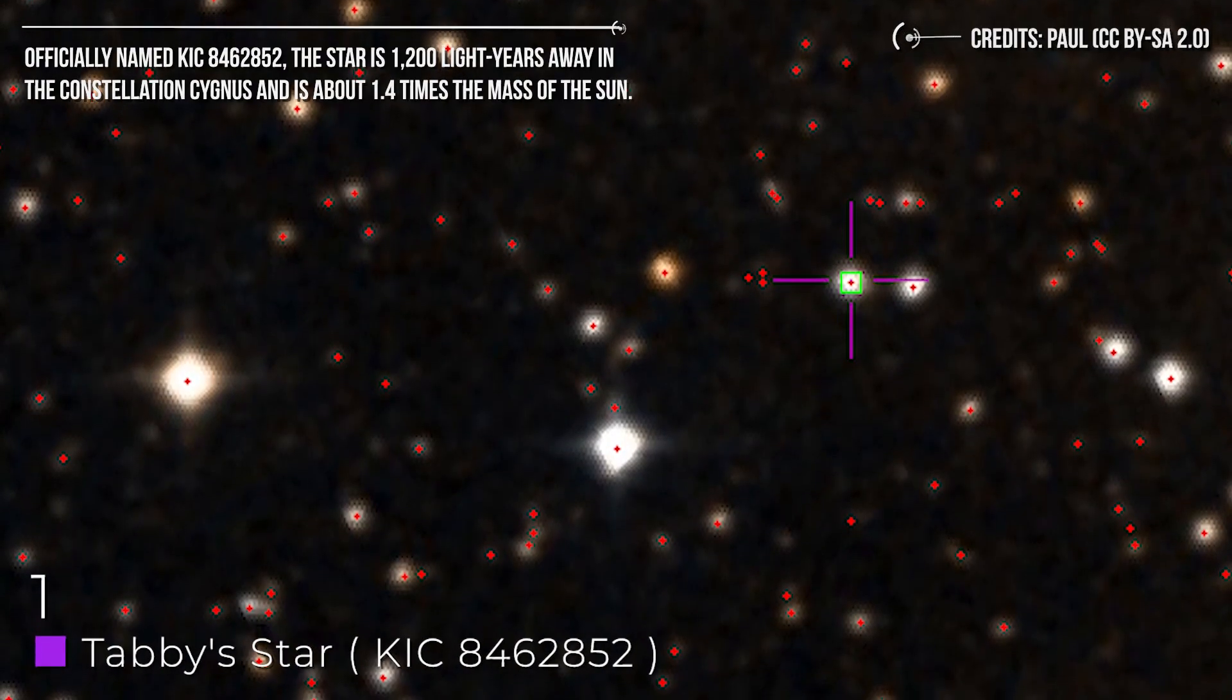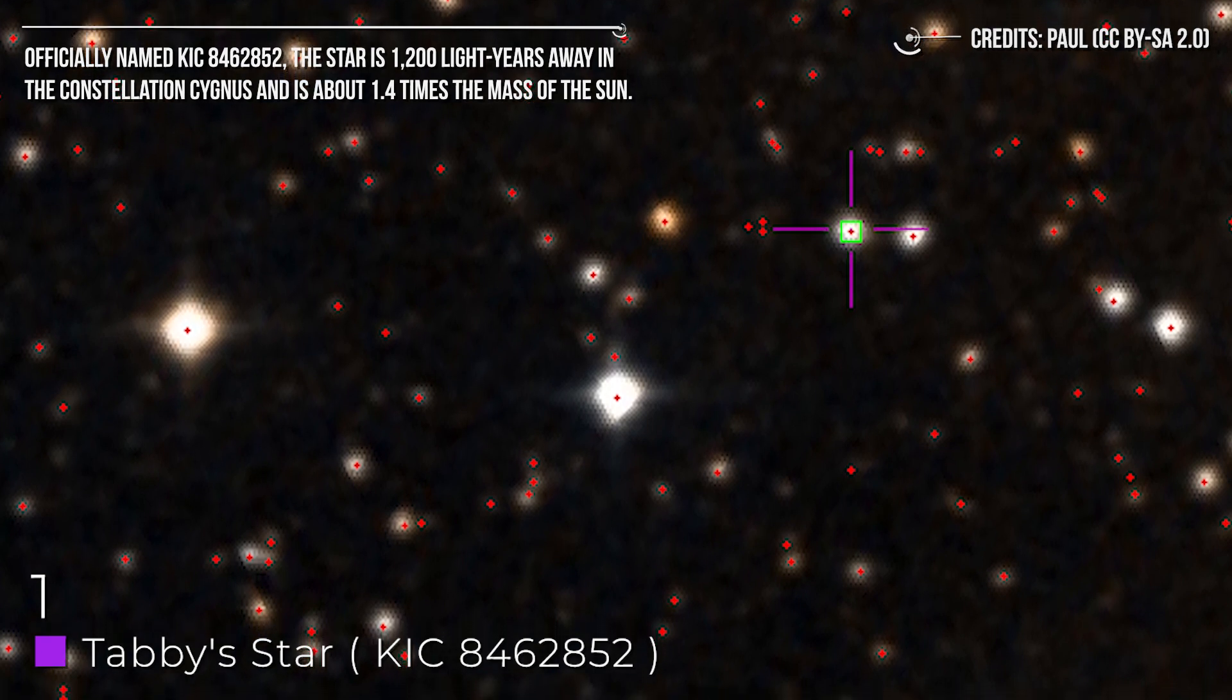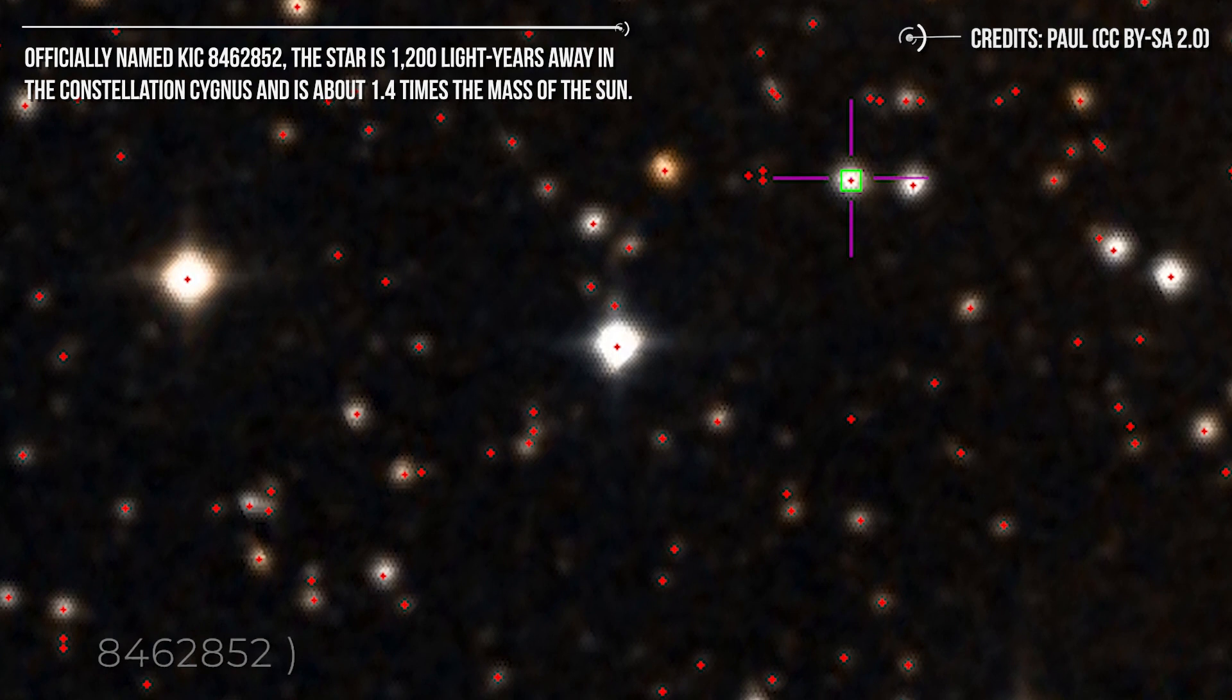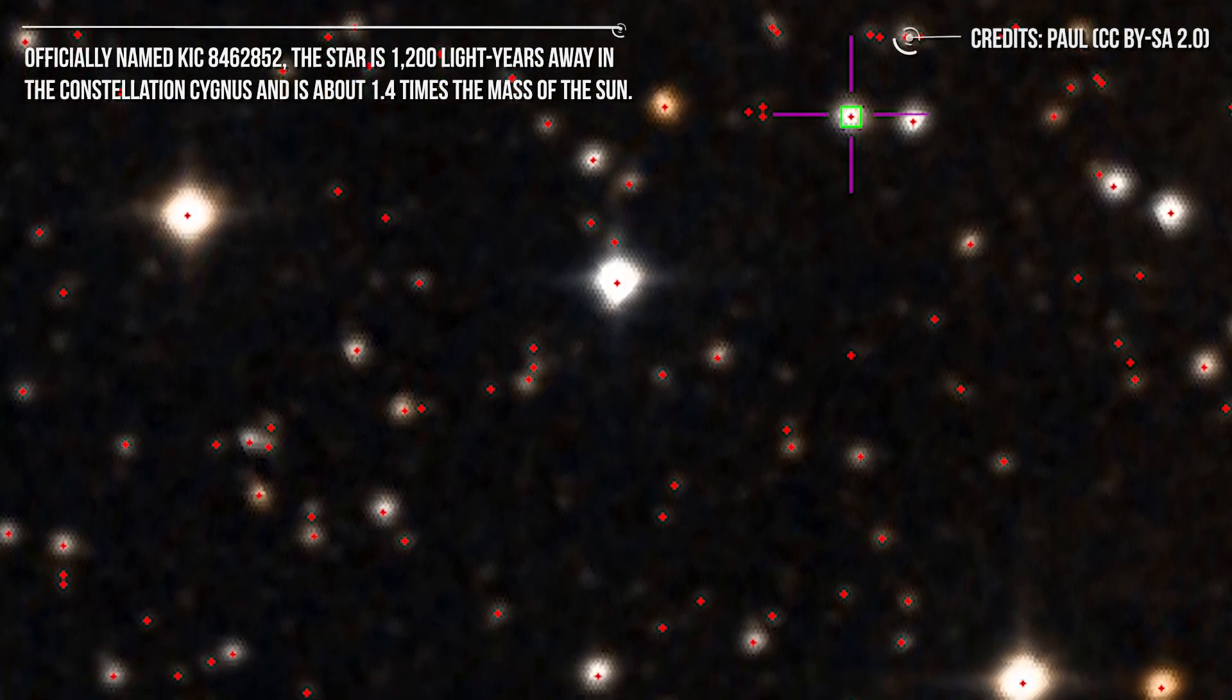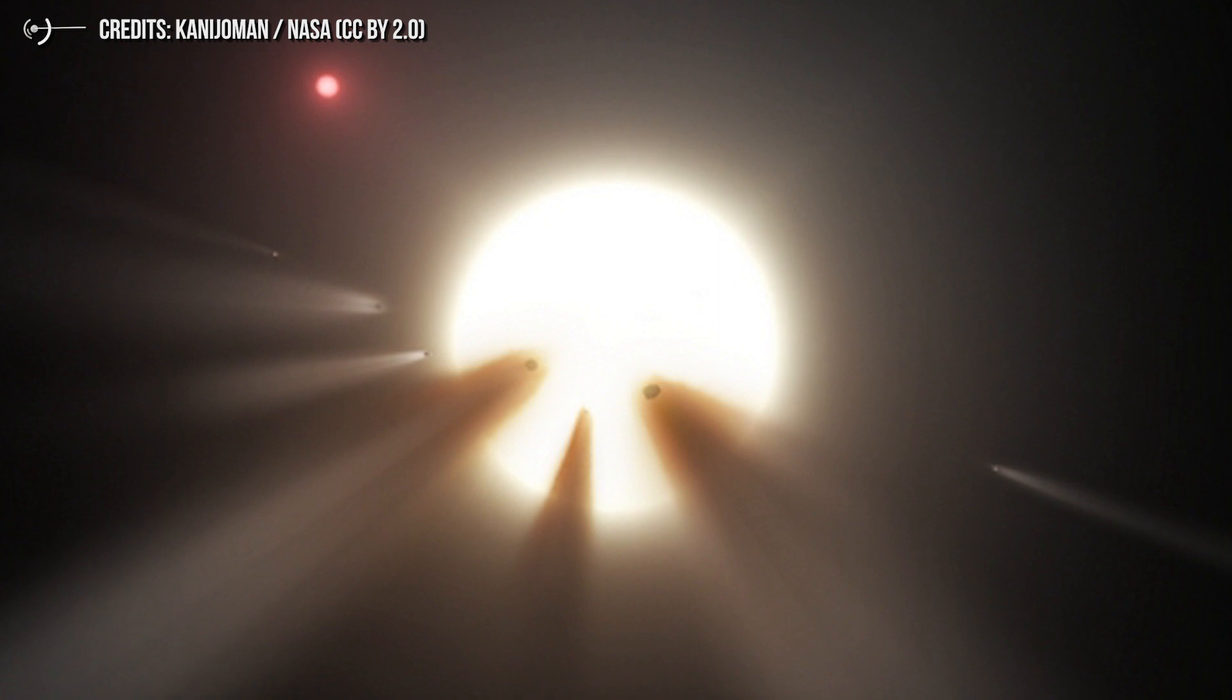Number 1: Tabby's Star. Officially named KIC 8462852, the star is 1200 light-years away in the constellation Cygnus and is about 1.4 times the mass of the Sun. What intrigued astronomers about this star is that a transiting object caused it to dip in light by as much as 20%.